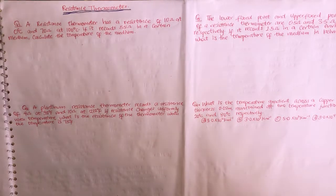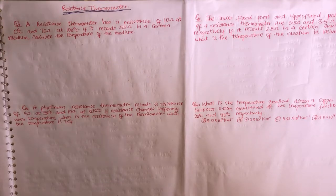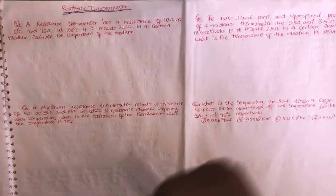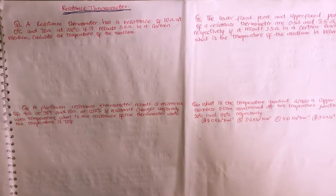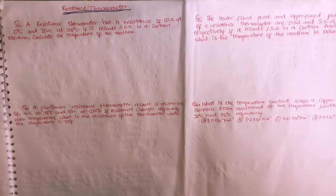The first question: a resistance thermometer has a resistance of 10 ohms at 0°C and 70 ohms at 100°C. If it records 55 ohms in a certain medium, calculate the temperature of the medium. The question involves two scales: the resistance scale and the Celsius scale. At 0°C we have the lower fixed point, and at 100°C we have the upper fixed point — also known as the steam point.